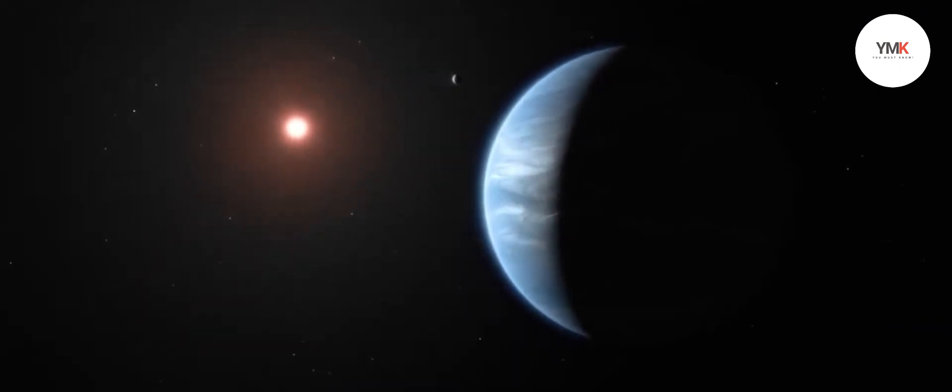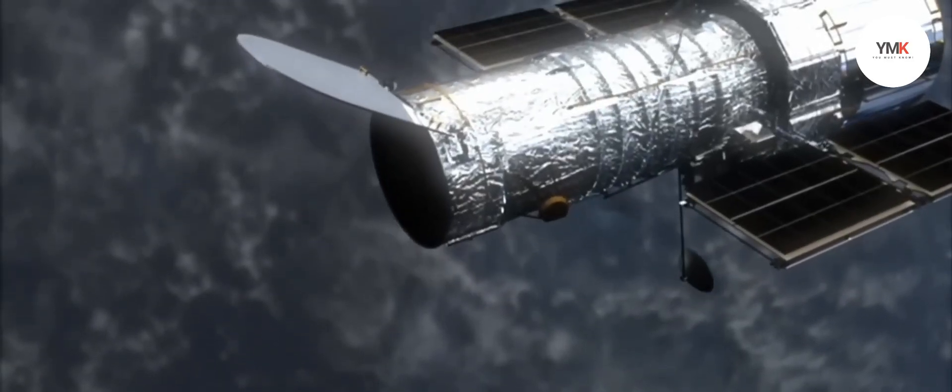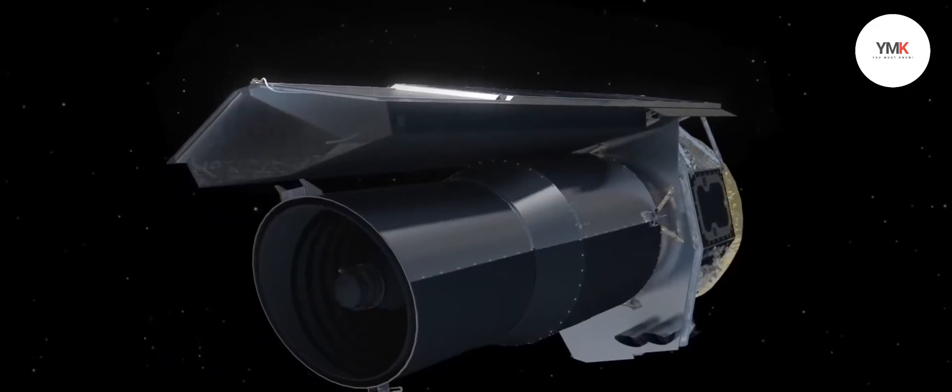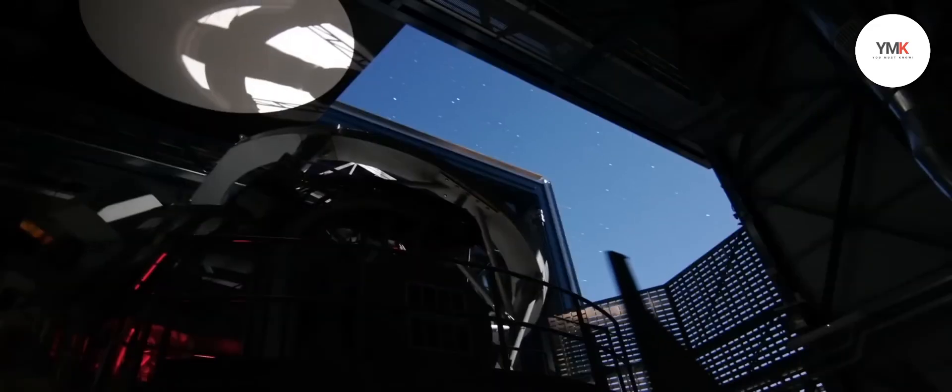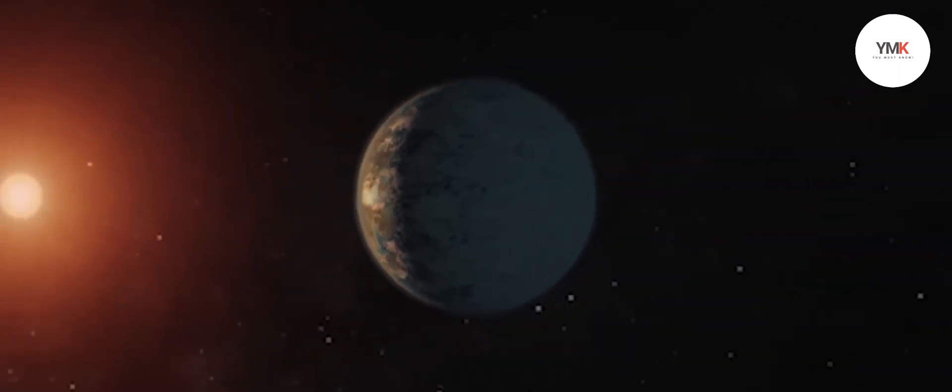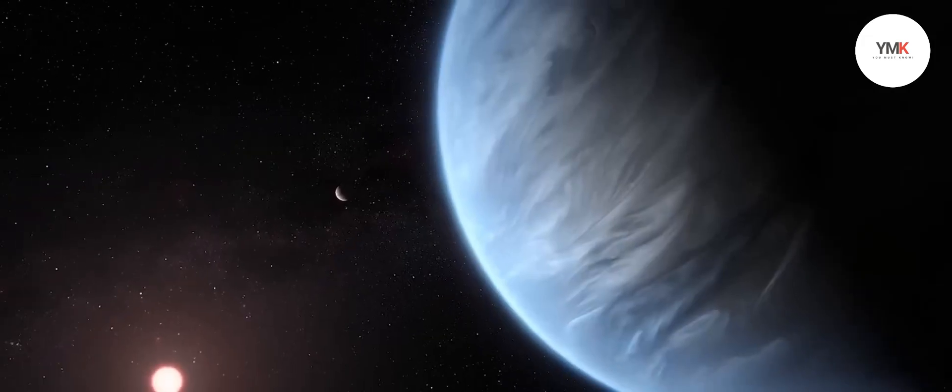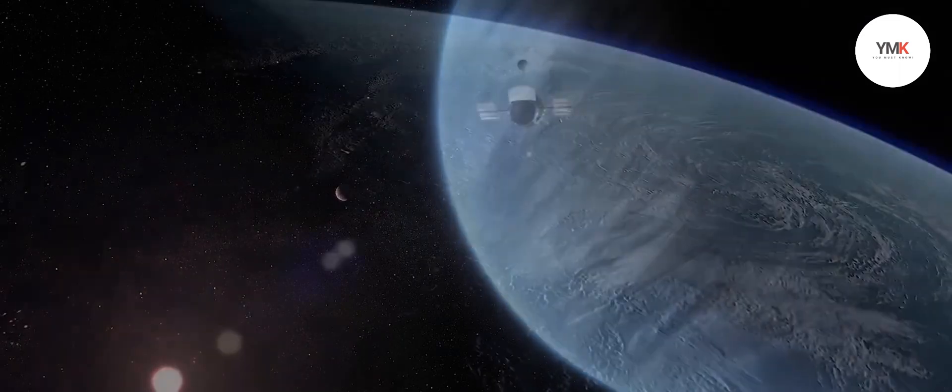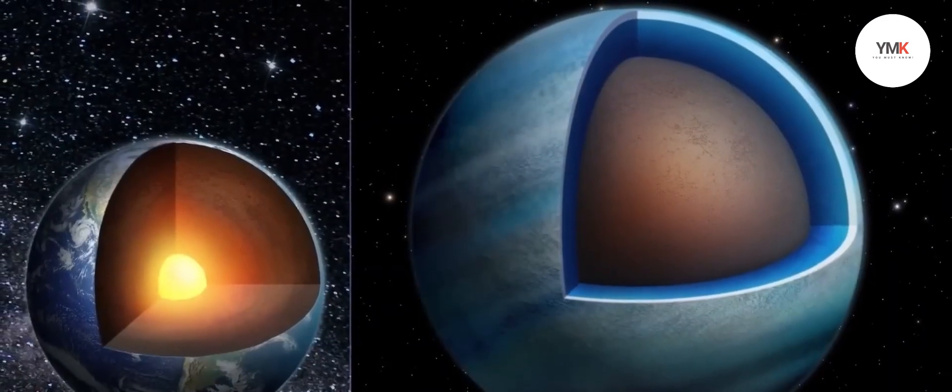From that observation, the team of astronomers found that two exoplanets are about one and a half times the size of Earth and are mostly made up of water. Apart from that, astronomers also know that the two planets are orbiting their star quite closely.